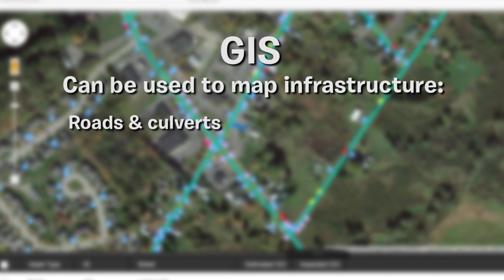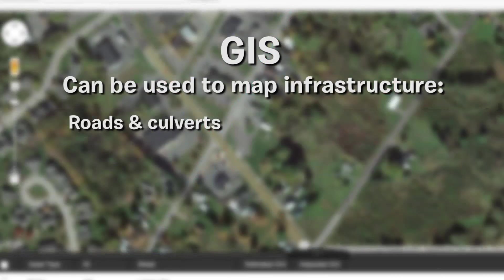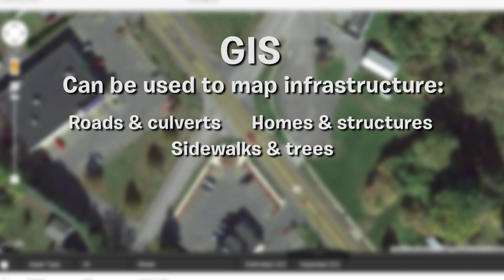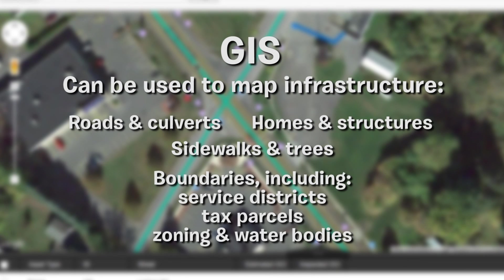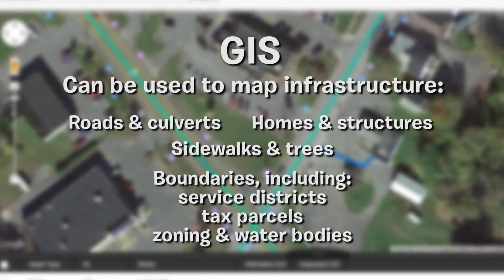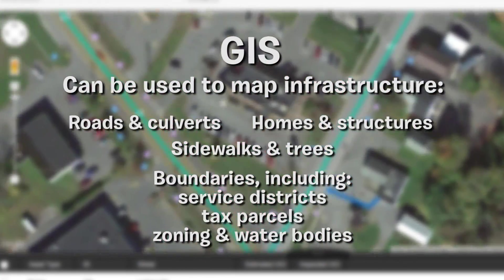It can also be used to map roads and culverts, homes and structures, even sidewalks and trees, and boundaries including service districts, tax parcels, zoning, and water bodies.